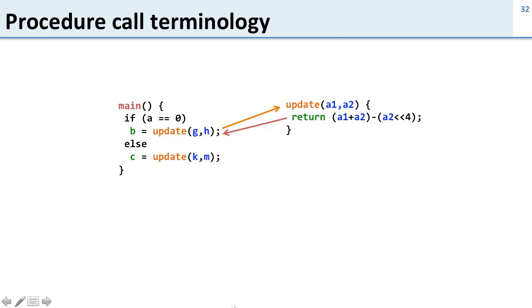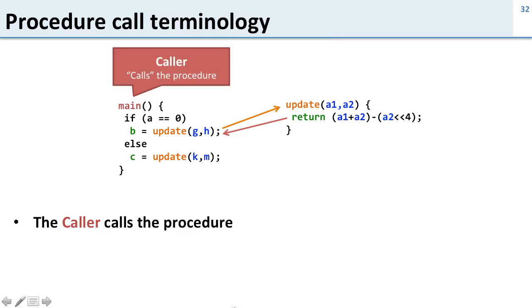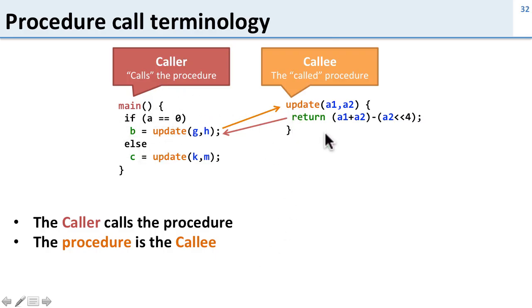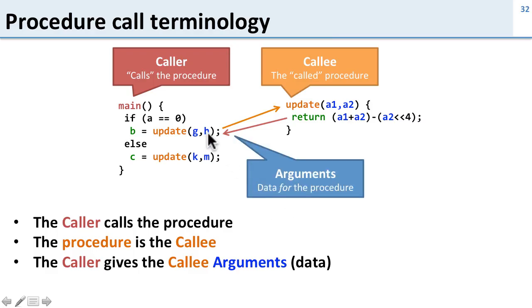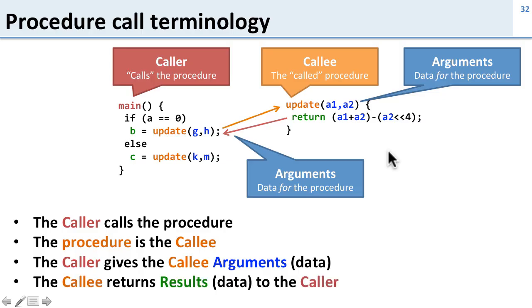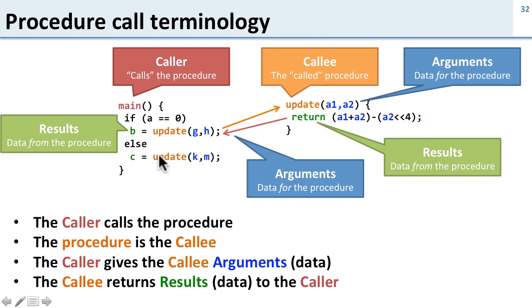The terminology for this is important to get straight. The caller calls the procedure. So here main is our caller, colored red in the slides. Then the procedure is the thing that's called - it's the callee which we color orange. So the caller is calling the callee. We've got arguments - this is how the caller gives the callee information. Here are the arguments g and h and within the procedure itself or the callee you have the arguments as well, colored blue in the slides. Then the callee returns the result or the data back to the caller. Here you can see it returning it and finally the caller gets it back, colored green.